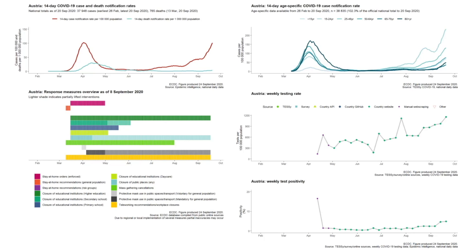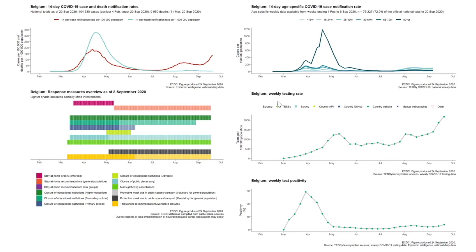Let's look at some other countries. Here is Belgium — again, first wave with lots of elderly people, testing going way up, and after the mandatory stay-at-home order, things continued to go down but then eventually started to come back up again.